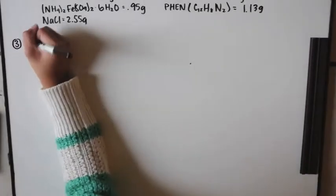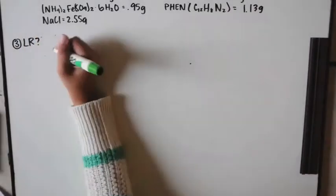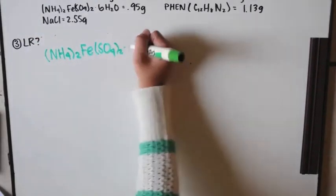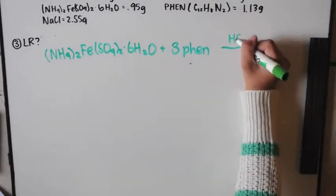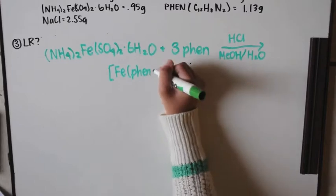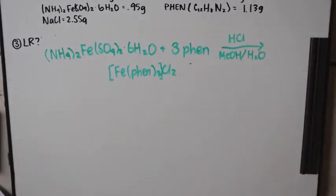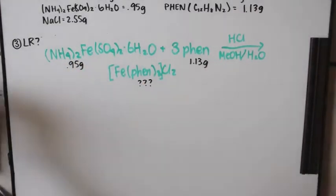Number three is asking what is the limiting reagent in this experiment, and you need a balanced chemical equation to answer this. Ferrous ammonium sulfate plus three phen would produce one mole of iron tris-phen chloride salt. We then determine which reactant produces the least amount of product.